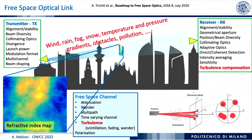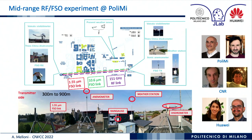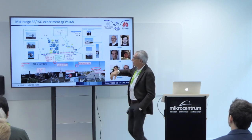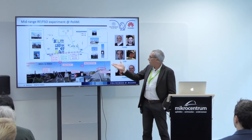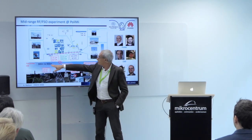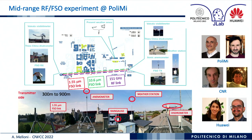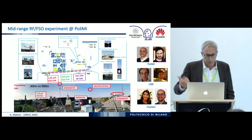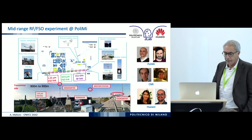Before passing to the optical processor, I want to mention that at Politecnico di Milano we have a link on campus. This is a map of the old campus, and we have three links with colleagues at 1.55 micron, with links ranging from 300 to 900 meters. We also have a link at 10.6 micron to be installed next month, a link at 150 GHz radio frequency, and probably another at 250 gigahertz next year.